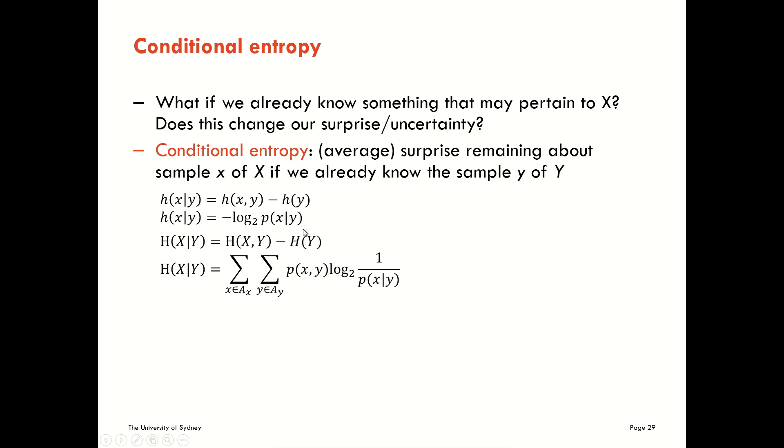So it's fairly straightforward to write down. We're simply writing down now instead of the Shannon information content being the minus log of the probability of X, we're now just changing to look at the conditional probability of X given Y. And again, for the average we write down our conditional Shannon information content and we average over the joint space of X and Y.